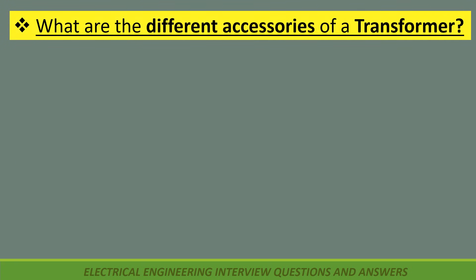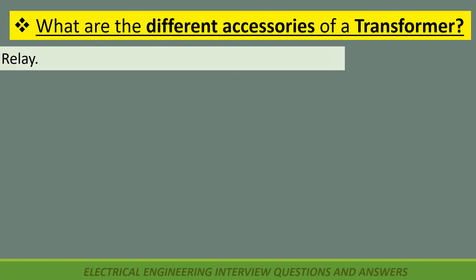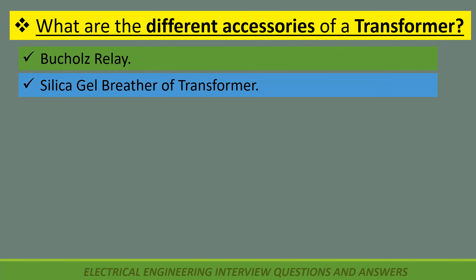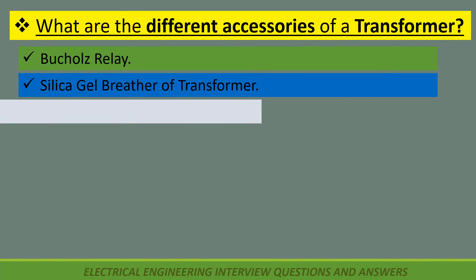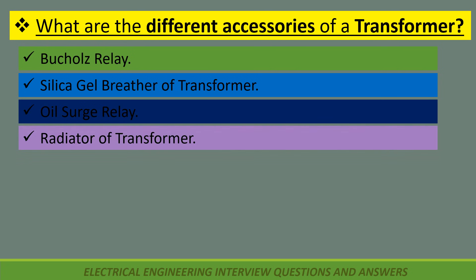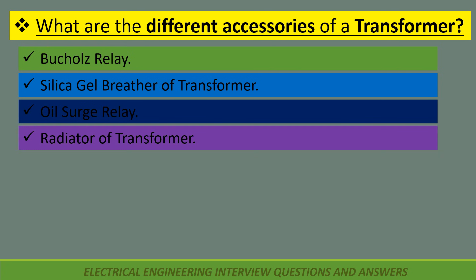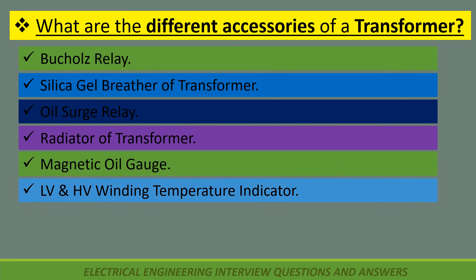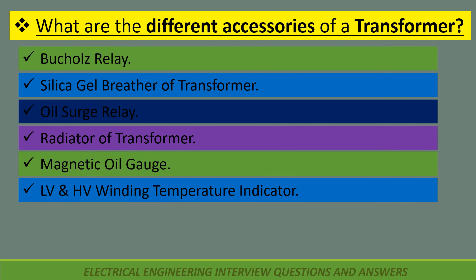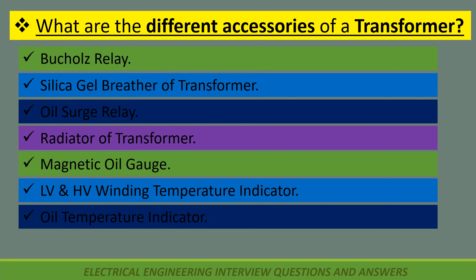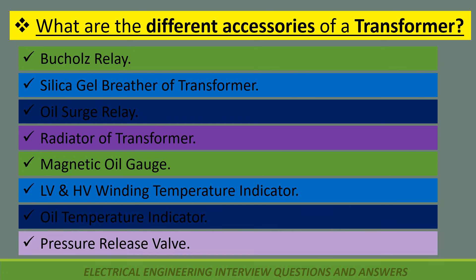What are the different accessories of a transformer? Buchholz relay, silica gel breather, oil surge relay, radiator, magnetic oil gauge, LV and HV winding temperature indicator, oil temperature indicator, and pressure release valve.